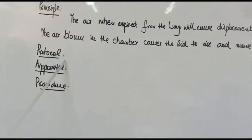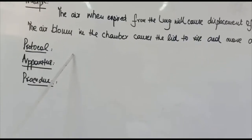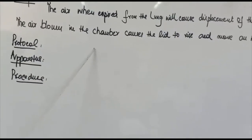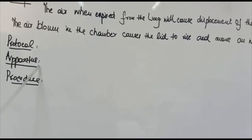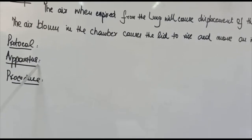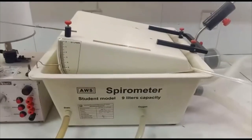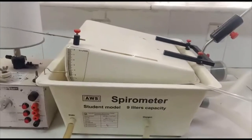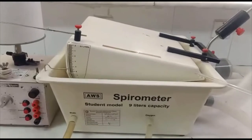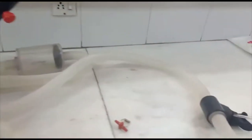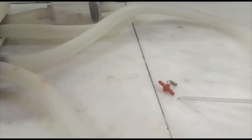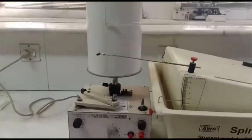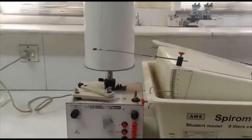For the protocol, we take consent of the subject and explain the procedure. The apparatus used in this practical includes: a wet spirometer, a mouthpiece, a nose clip, a kymograph, a drum with paper, and pen and ink.